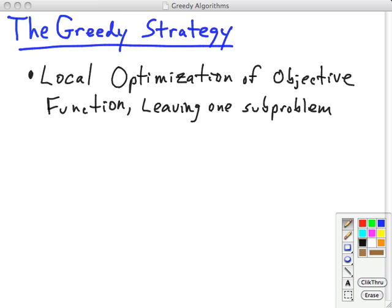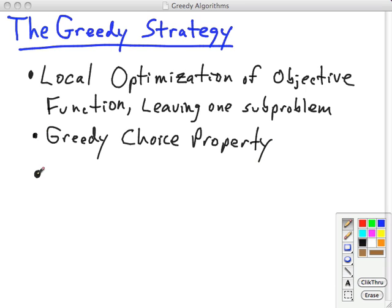Of course, this only works if that greedy choice, that local optimization, is always part of some optimal solution. This is called the greedy choice property, and it's related to the familiar property of optimal substructure. Both greedy algorithms and dynamic programming require that problems have optimal substructure. We need to demonstrate that an optimal solution to the problem contains within it optimal solutions to sub-problems.